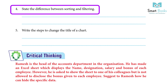4. State the difference between sorting and filtering. Answer — Sorting: 1. Sorting helps you organize data. 2. It helps in sorting text in alphabetical, numerical, oldest to newest, or newest to oldest order. 3. Sorting does not enable the hiding feature. Filtering: 1. Filtering temporarily hides some of the data in the table. 2. It does not help in ordering text. 3. It enables you to focus on the data of your choice.